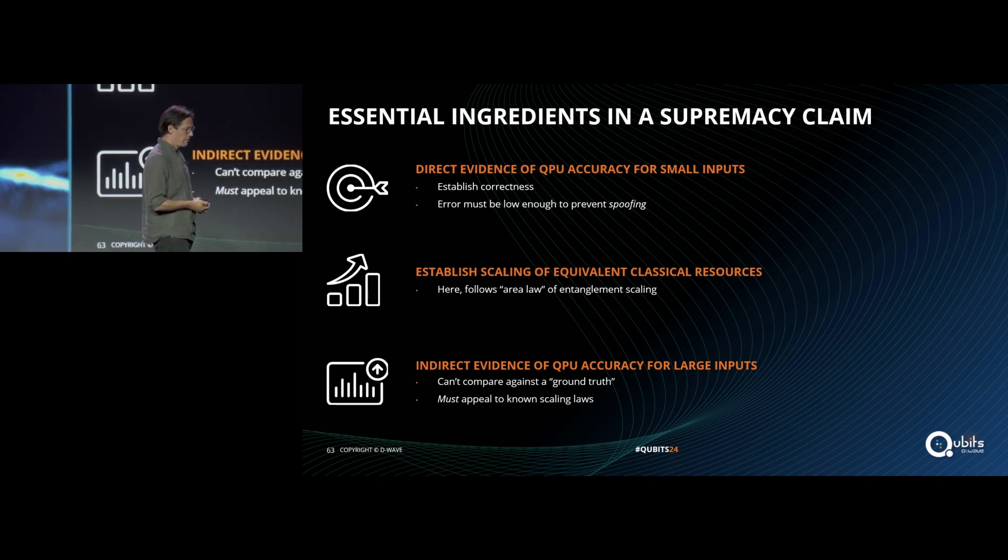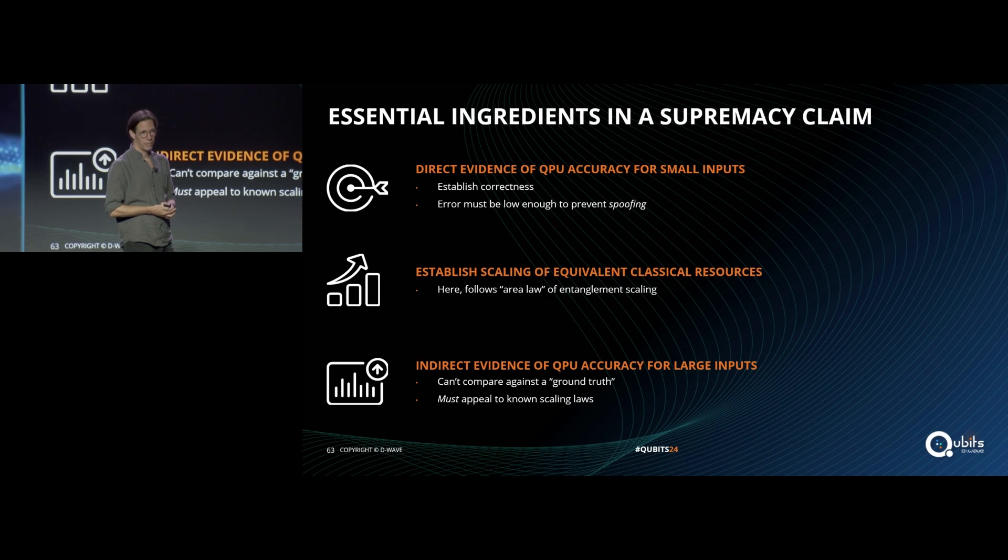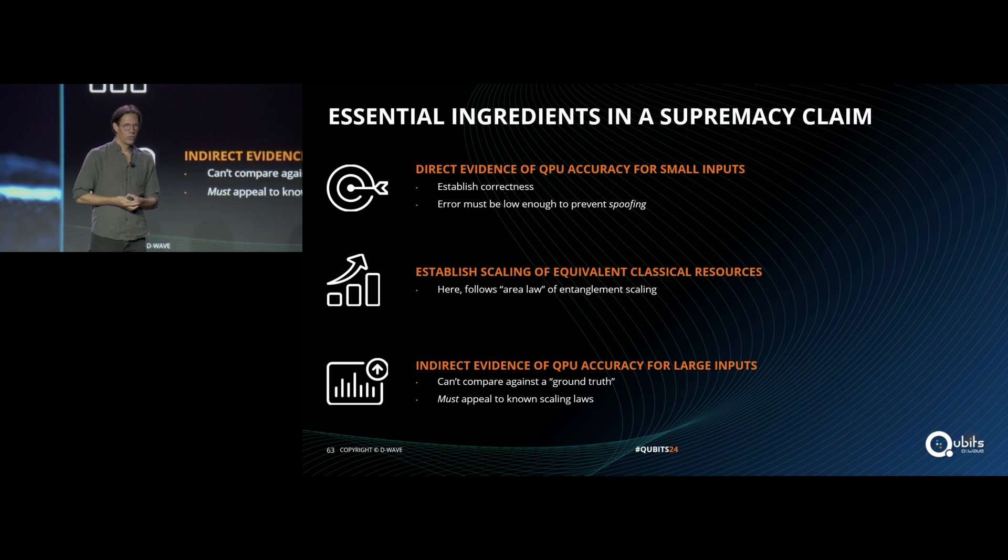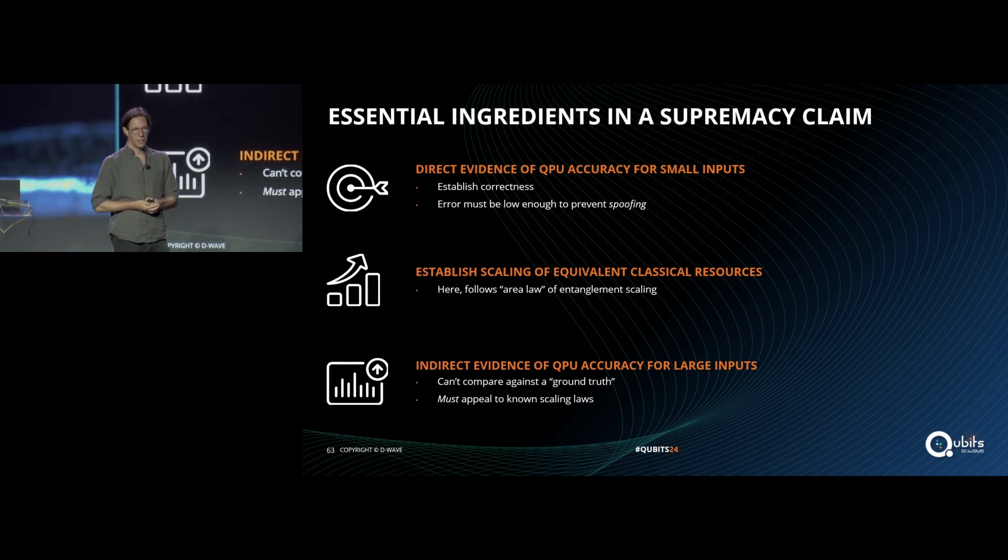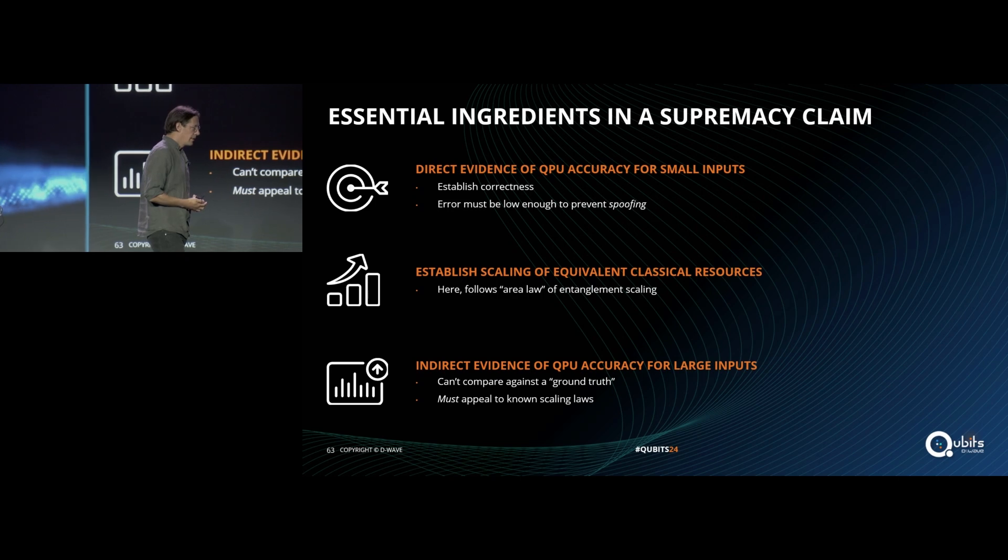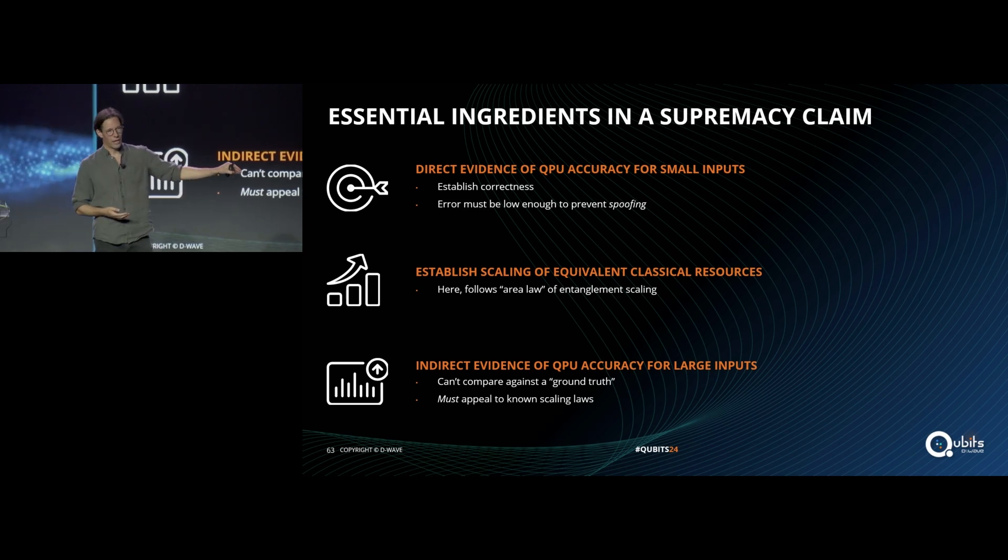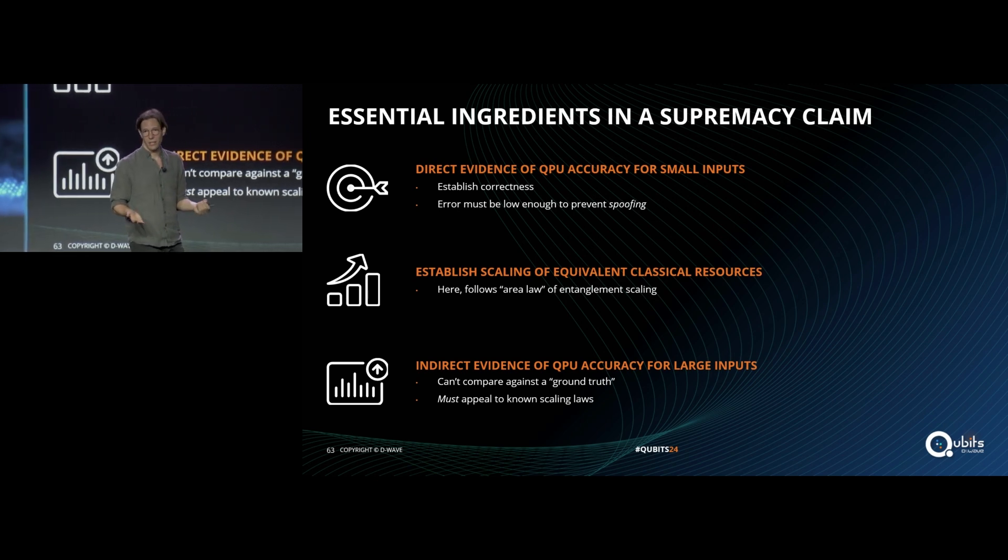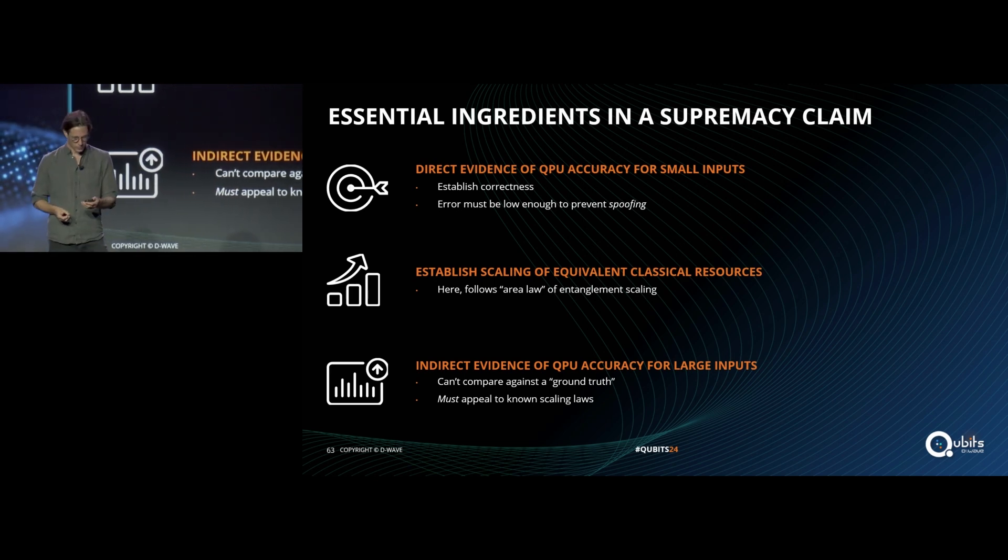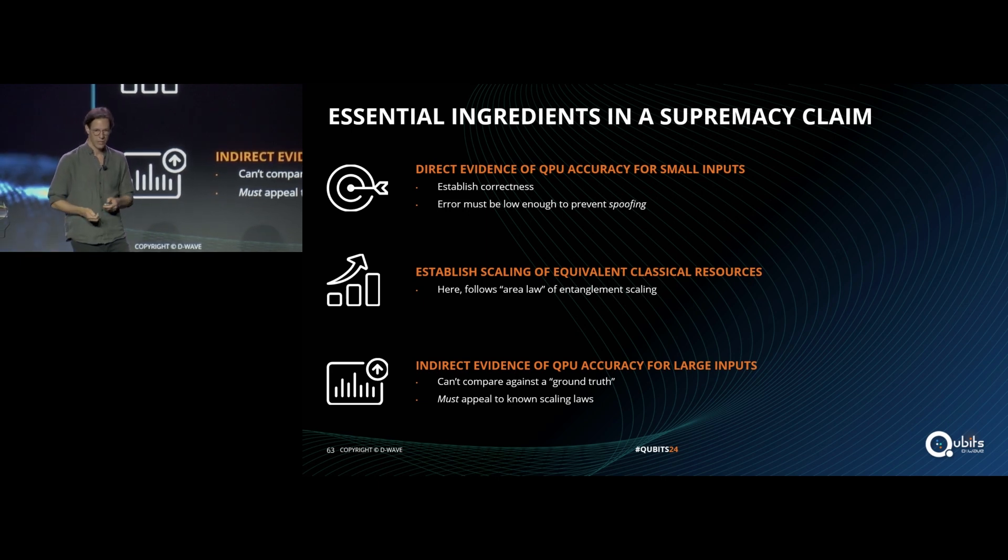The next ingredient is making the case that the classical method will scale hopelessly or with a stretched exponential form or an exponential form. To do this, we basically appeal to area law scaling of entanglement, and we show that the required bond dimension scales exponentially in the system size. Finally, the third and most challenging part is making the case that your quantum computer is getting the right answer when no classical computer can check it. We're not quite at the point where a different modality of quantum computing can check our work because nobody can do simulations of this size other than us. We don't have a ground truth that is calculated by a classical simulation. So we need some way of convincing ourselves and others that we're getting the right answer. You need to appeal to known scaling laws. The scaling laws that we're going to appeal to are the Kibble-Zurek mechanism. This is all to do with the theory of quantum phase transitions, which works really nicely in this context.